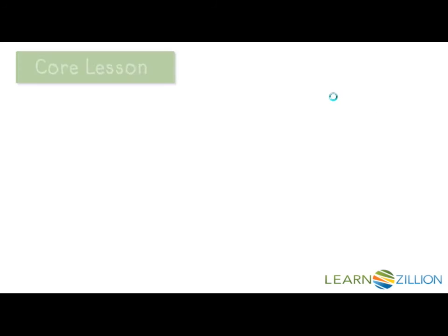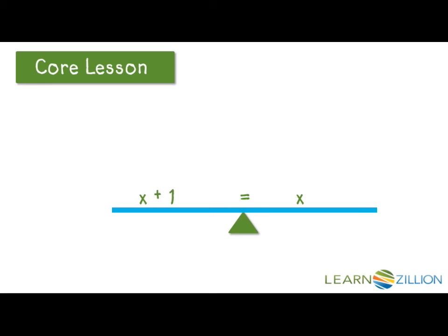Let's look and see what this means on a scale. If this scale represents x plus 1 is equal to x, both sides have to be equal in order for my scale to balance. What is different about both sides of the equation, or the scale? They're almost identical, except for the left-hand side has a 1 added to it.